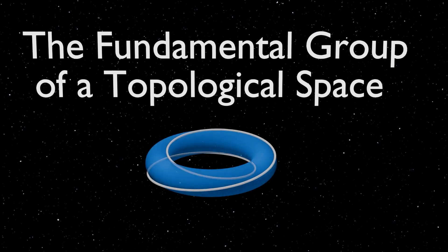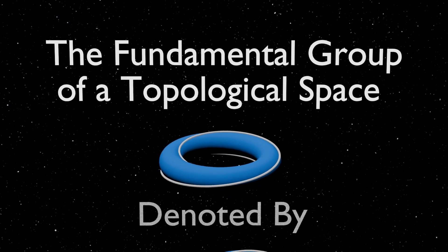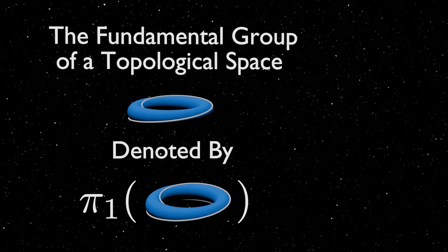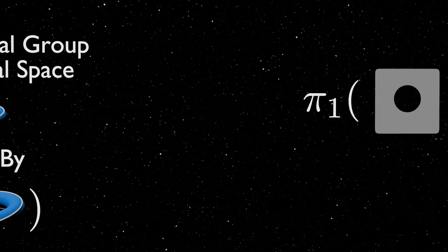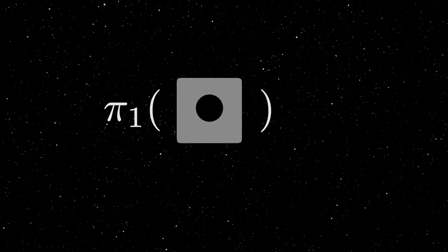The algebraic structure of loops on a planet is what a topologist would call its fundamental group. The planet can be replaced by just thinking about a general topological space.